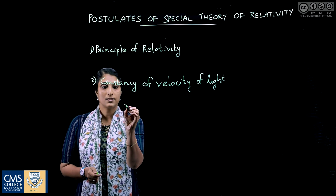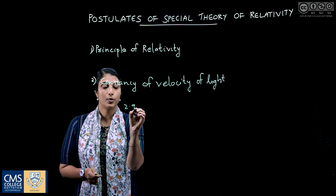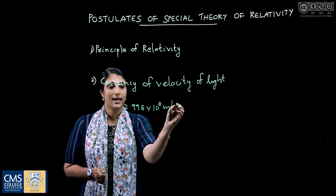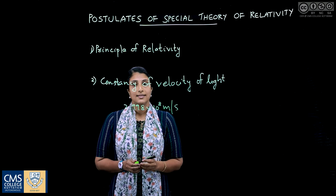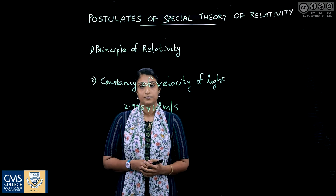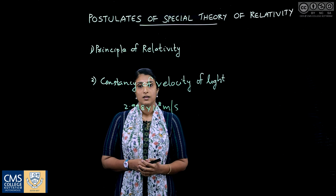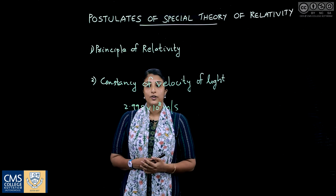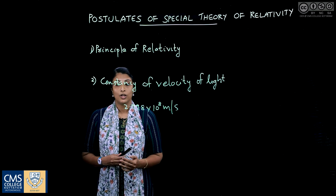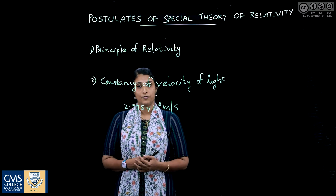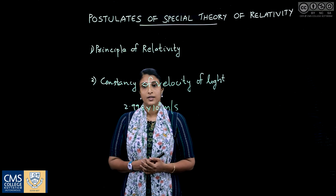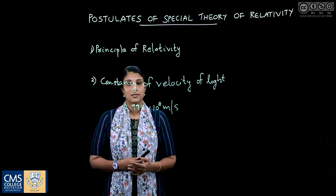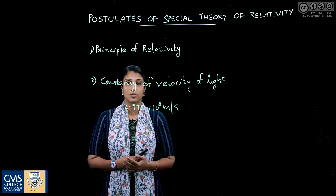Its value is 2.998 × 10^8 meters per second, up to four significant figures. Thus, it is clear that Einstein's special theory of relativity is valid only for inertial frames of reference — that is, frames of reference in which Newton's first law of motion holds good.